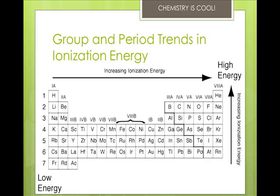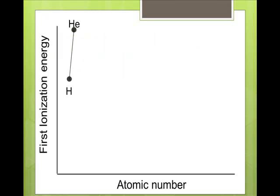The greater the nuclear charge, the greater the ionization energy. In other words, if it's farther to the right on the period toward the noble gases, the ionization energy is going to be very high. The greater the distance from the nucleus, the lower the ionization energy — it's just the reverse of the nuclear charge rule. If the electron is floating way out away from the nucleus, it's easier to lose than the ones that are closer to the nucleus.